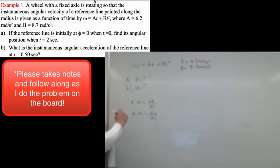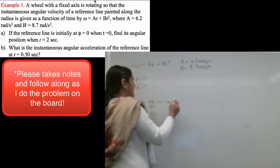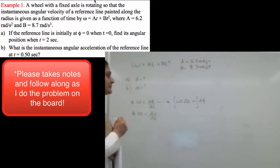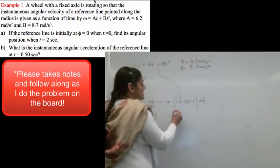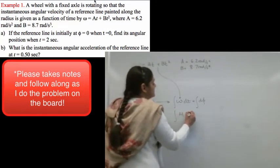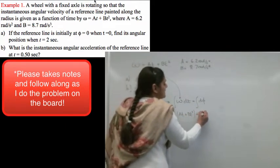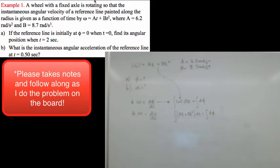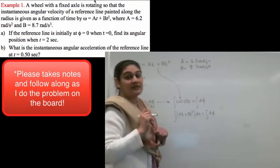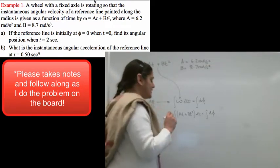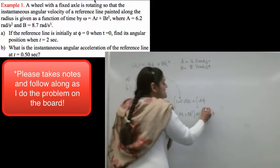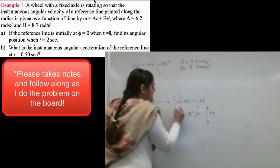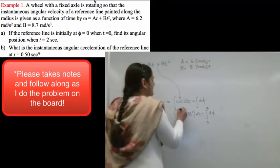To find φ knowing this expression for ω, we recognize that ω dt = dφ, so we integrate both sides. We integrate (at + bt²) dt to get φ. The boundary conditions given say the reference line starts at φ = 0 when t = 0, and in part (a) the final time t = 2 seconds.